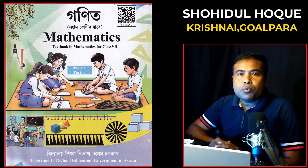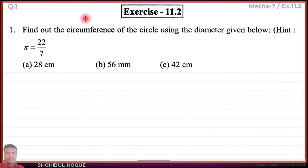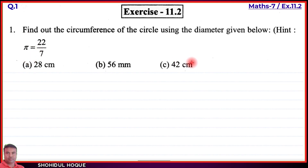Mathematics class 7, new book part 2, exercise 11.2, English medium, question number one. The question asks us to find the circumference of the circle using the diameter given below. Hint: pi equals 22 by 7. There are three parts A, B, C with different diameters.